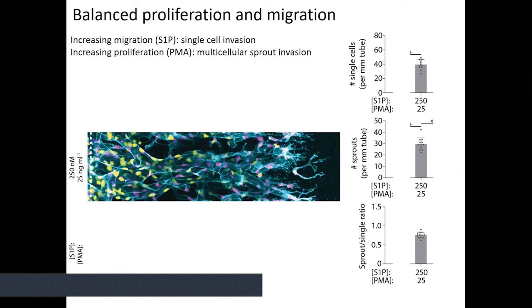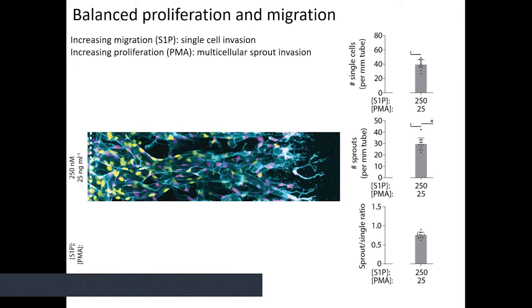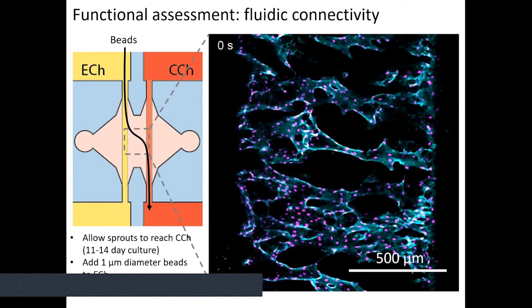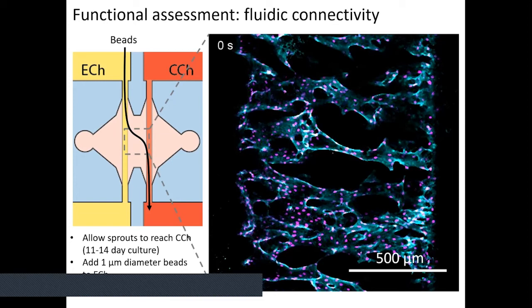In the next experiment, starting from an intermediate S1P and PMA condition giving collective sprouts: if we go to higher S1P concentration but also increase PMA, we see more invasion while maintaining sprout connectivity. If we go lower in chemotactic gradient and lower proliferation rate, there's less depth of invasion but still multicellular structures invading. To assess perfusability, we add fluorescent microspheres to one side after vessels have anastomosed with the other side. This is a timelapse image of the yellow fluorescent microspheres flowing through the vessel bed network from left to right via hydrostatic pressure difference.